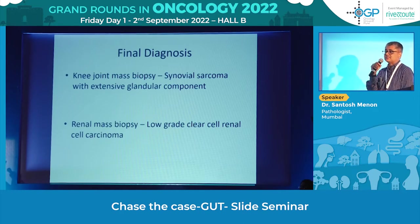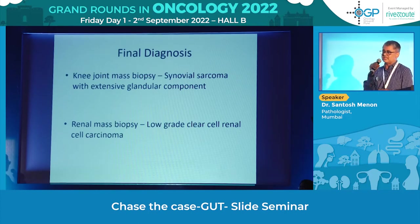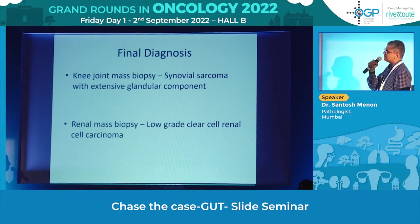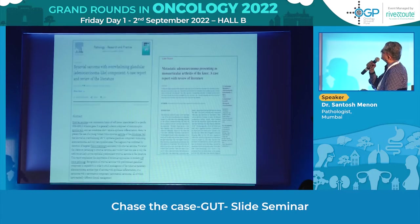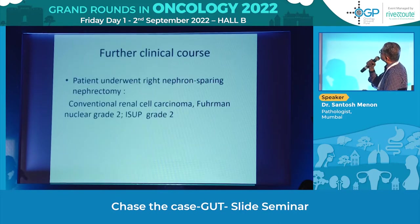The point is: if somebody says it's a pancreatic-biliary primary, the patient directly becomes a palliative patient and nothing further is done. They may do an MRCP to find the primary. The renal mass was a low-grade renal cell carcinoma. These are rare tumours but something described in literature, and obviously everything is described in literature.